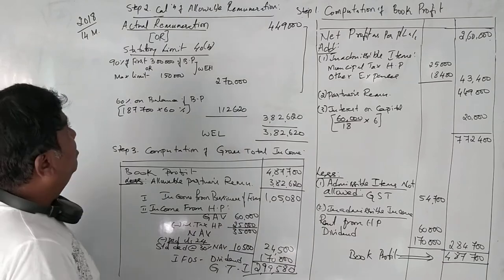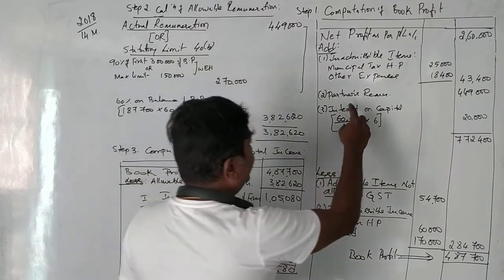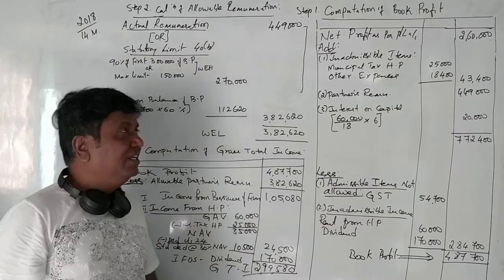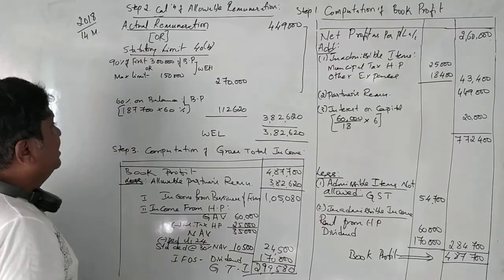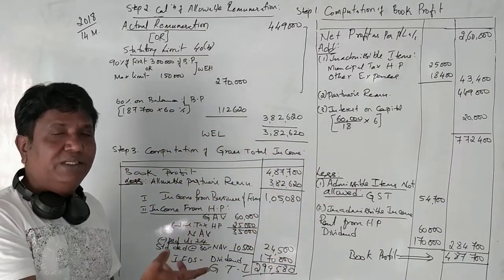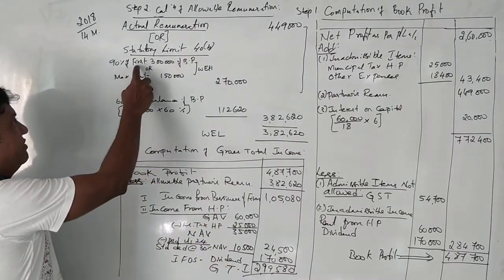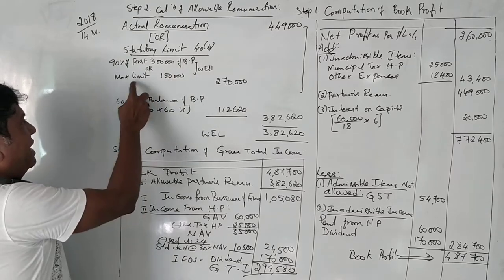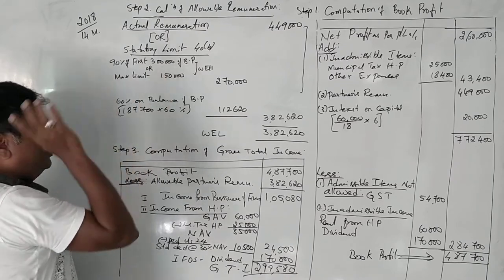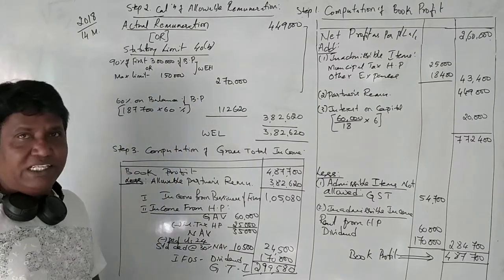Step number two is calculation of allowable remuneration. The actual remuneration we paid is 4,47,000. Now, what is the statutory limit? If the book profit is more than 3,00,000 rupees, is it more than 3,00,000 rupees? Yes, it is more than 3,00,000 rupees. In this, 90% of the first 3,00,000 of book profit or maximum limit of 1,50,000, in these two which is higher. 90% of 3,00,000 will be 2,70,000. Definitely, 2,70,000 will be greater than this. So therefore, I have taken 2,70,000.